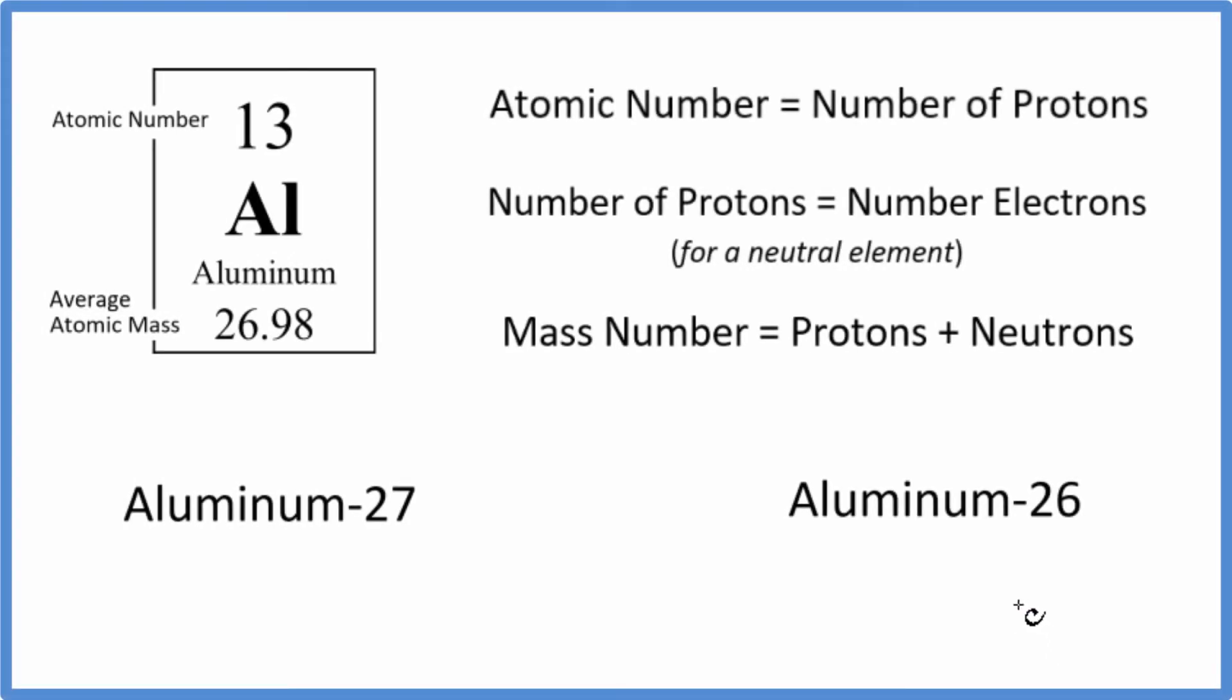In this video, we'll look at the isotope notation for aluminum, Al. It's also called nuclear notation, sometimes isotopic notation.